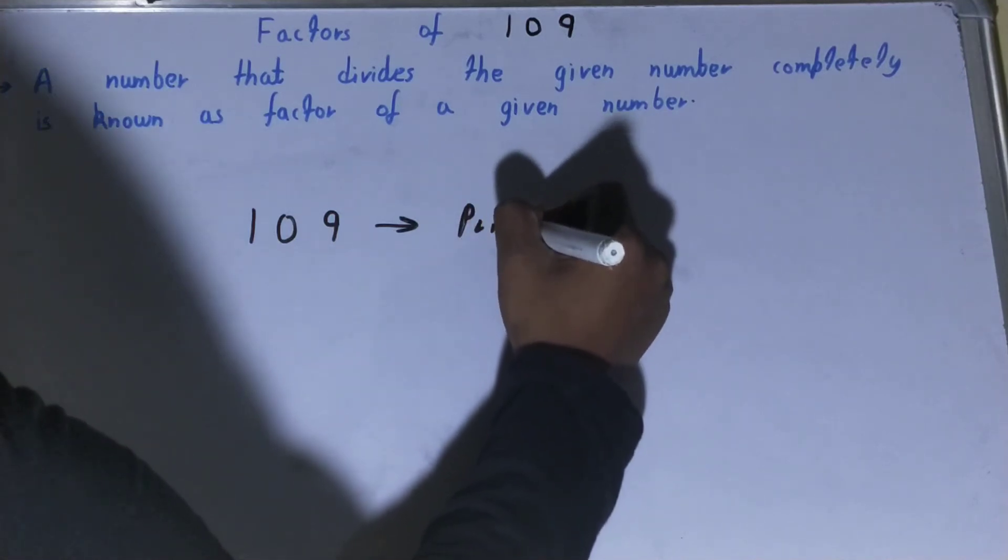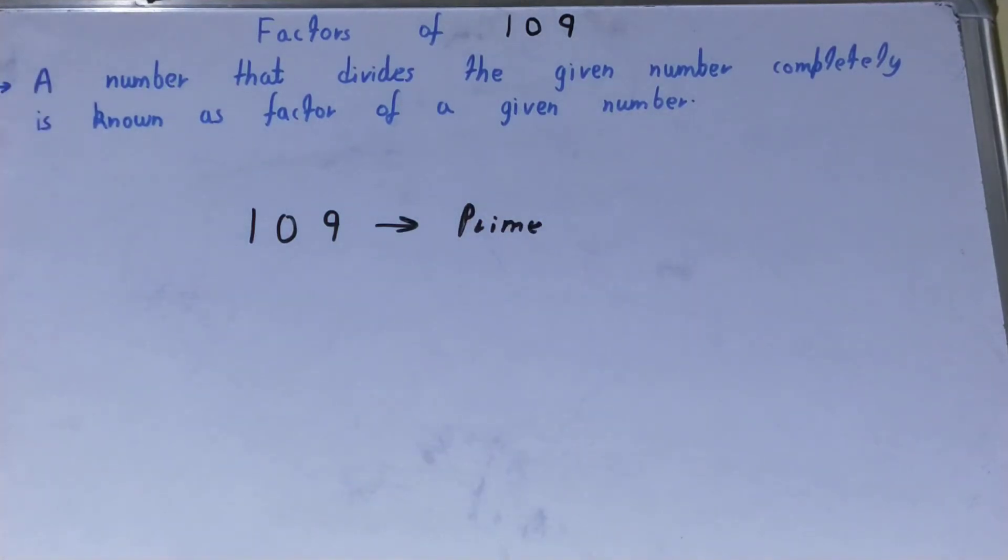The number 109 is a prime number. Now if the number is a prime number, the work becomes a lot simpler. Prime numbers have a speciality that they are only divisible by themselves and one only.